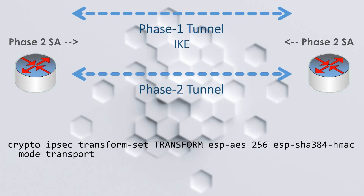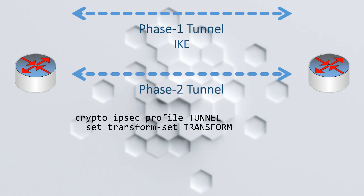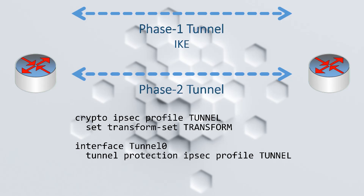Now that we have a bit of understanding of IPsec, we need to apply this to a GRE tunnel. On a Cisco router, we need to create a profile before it can be applied to an interface. At a minimum, we need to add in the transform set that we just created. The profile can then be added to the tunnel interface, and that's all we need to encrypt tunnel traffic.